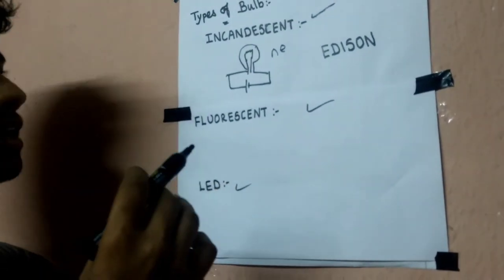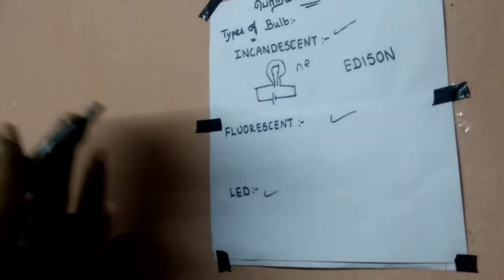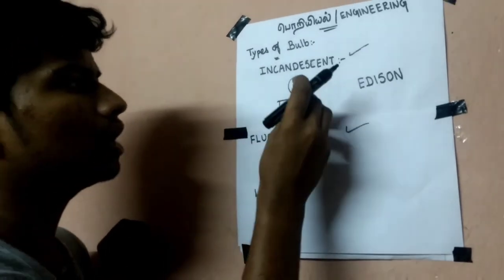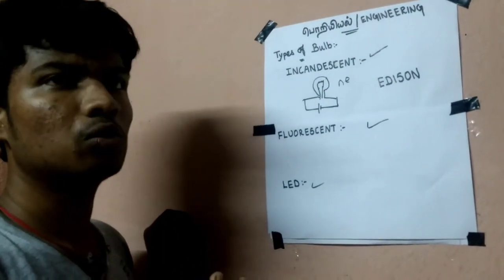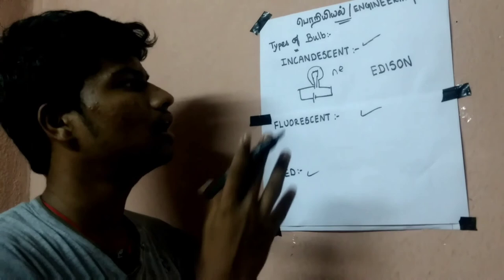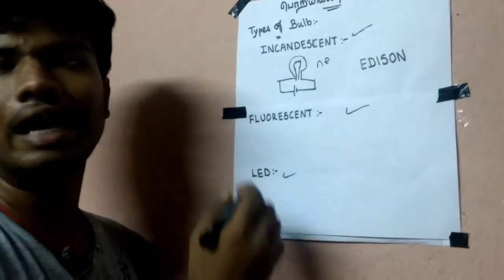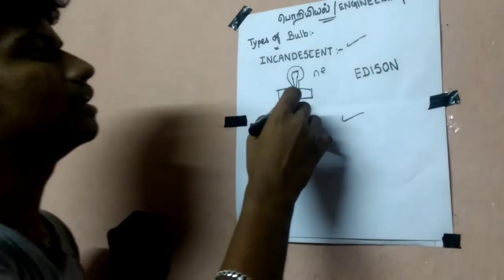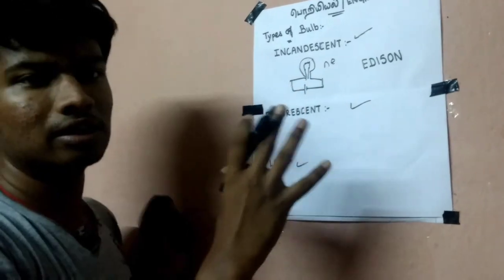The heat will produce light energy because it will produce high voltage and it will emit light energy.